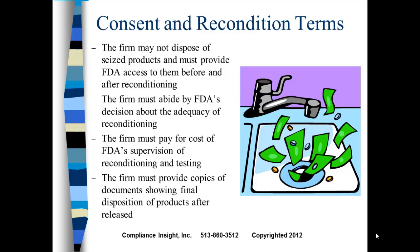The firm may not dispose of seized products and must provide the FDA access before and after reconditioning. They are going to be there — they will see and be aware of everything you do. The firm must abide by the FDA's decision and cannot deviate from it. The firm must also pay for the cost of FDA supervision of any reconditioning or retesting, and must provide copies of all documents showing what was done. This is all very time consuming.